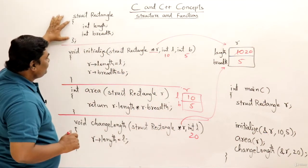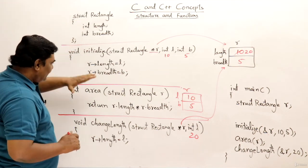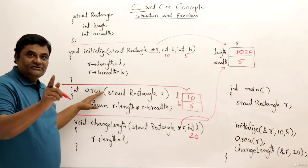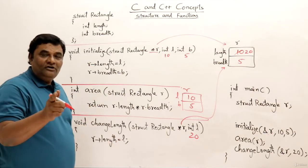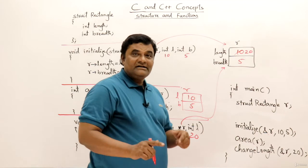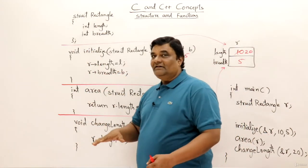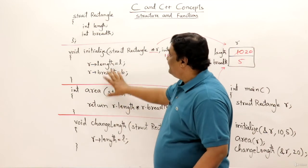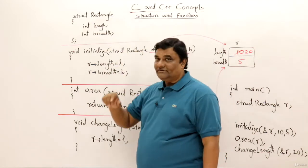So this is the structure. This function is related to this structure and this function area, this is also dependent on the same structure and this one also. So all these functions are related to that structure only. So in C programming this is the highest level of programming where we define the structure and we write all the functions related to that structure.